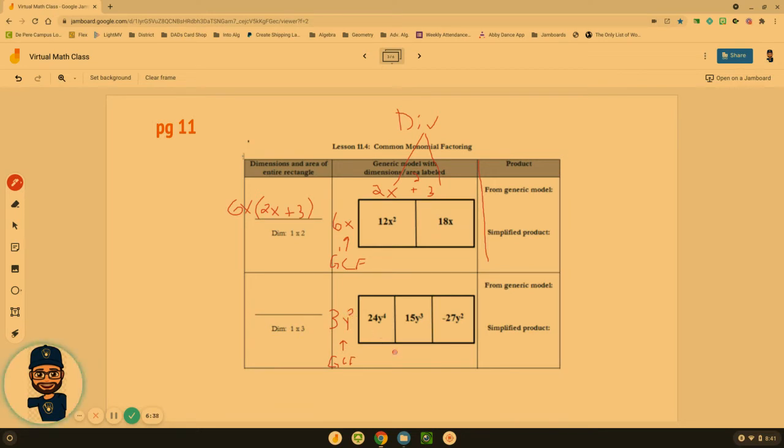Now let's work backwards. 3 times what number is 24? That's going to give me 8. How many more Y's do I need? If I've got Y² but I need Y to the 4th, that means I still have Y² that I need. 3 times what is 15? Well that's 5.